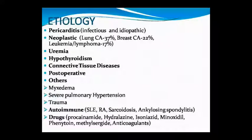Uremia means increased urea in the blood. Hypothyroidism involves reduced thyroid hormone. Other causes include connective tissue disease, post-operation, myxedema, severe pulmonary hypertension, trauma, and autoimmune diseases such as SLE — systemic lupus erythematosus — rheumatoid arthritis, sarcoidosis, and ankylosing spondylitis.